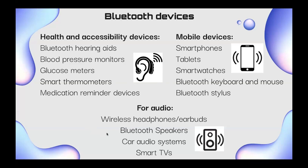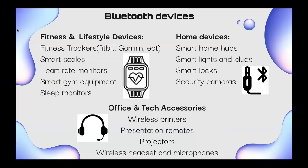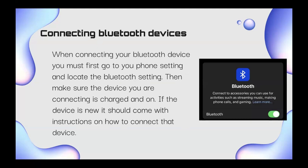When you use screen mirroring on your TV, that's also Bluetooth. Fitness devices include fitness trackers, smart scales, heart rate monitors, smart gym equipment, and sleep monitors. Office tech includes wireless printers, presentation remotes, and projectors, wireless headsets, and microphones. Home devices include smart hubs, smart lights and plugs, smart locks, and security cameras — mostly wireless, Bluetooth-connected stuff.